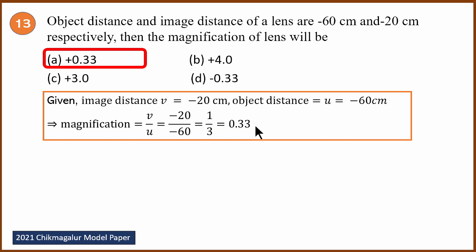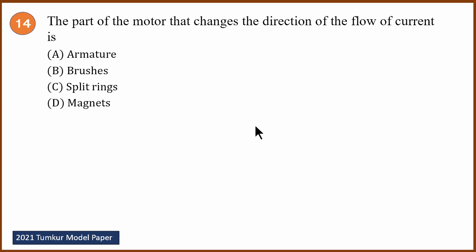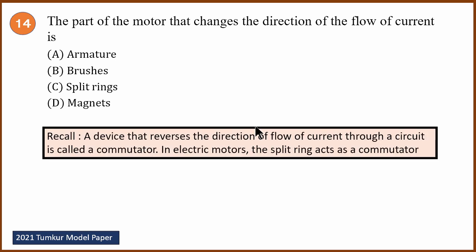This is a model paper question. Fourteenth question: the part of the motor that changes the direction of the flow of current. A device that reverses the direction of current flow through a circuit is called a commutator. In electric motors, the split ring acts as a commutator — this is a textbook statement. The answer is C: split ring.